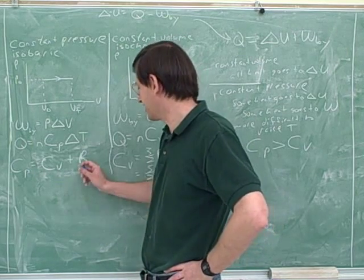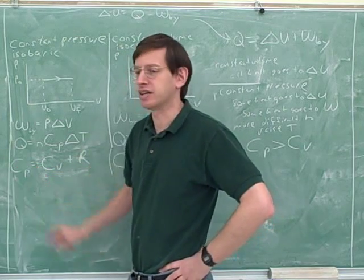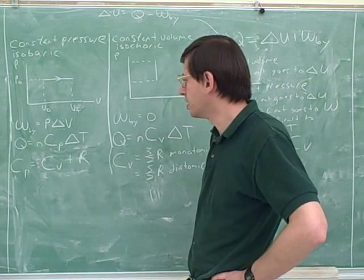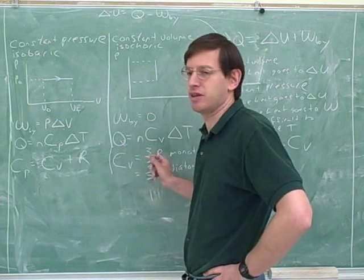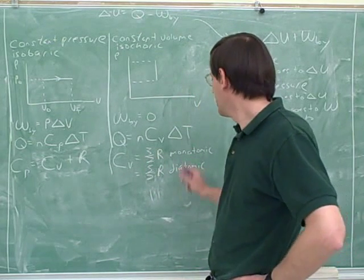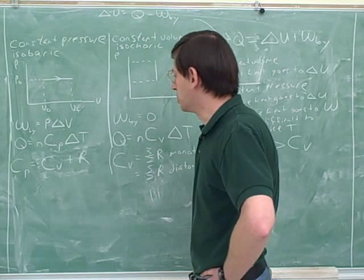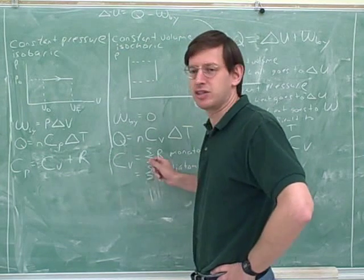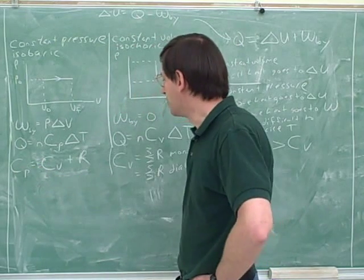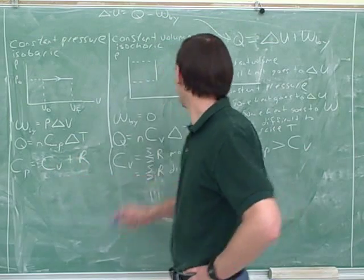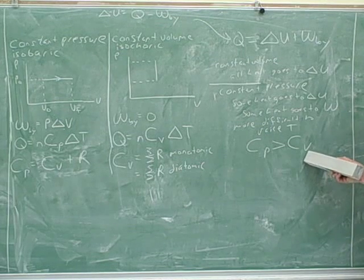Someone smarter figured out that you should add R to C_V to get C_P. For an ideal gas, you're expected to figure out the specific heats based on whether the gas is monatomic or diatomic — you wouldn't usually be given them. From that you can find C sub V, and then C sub P if needed. Avoid confusing the two: the C sub V equations are three-halves R and five-halves R, and C_P equals C_V plus R. C_P is bigger than C_V, as we worked through with this logic.